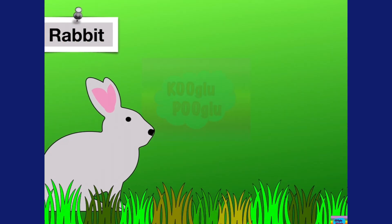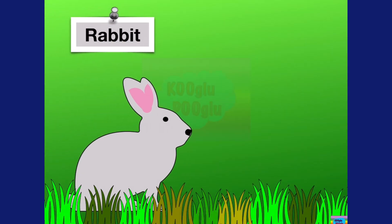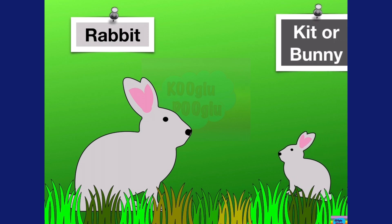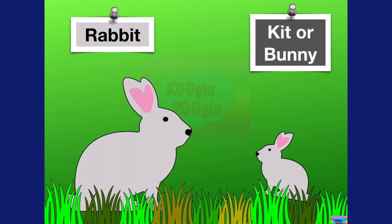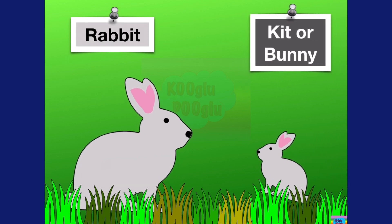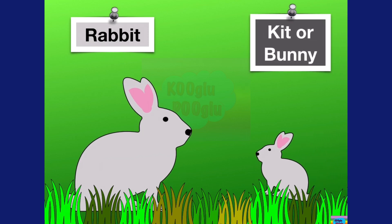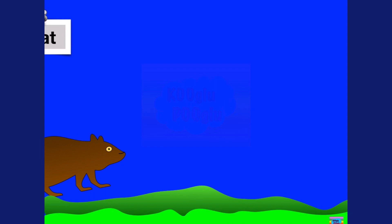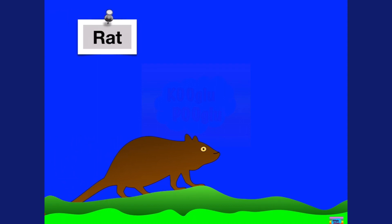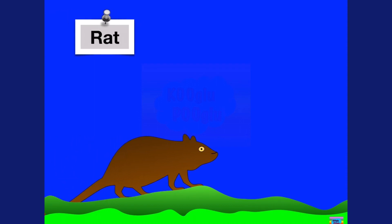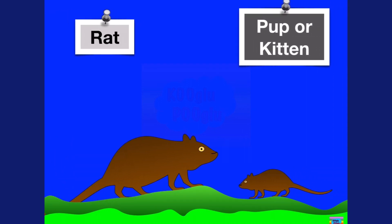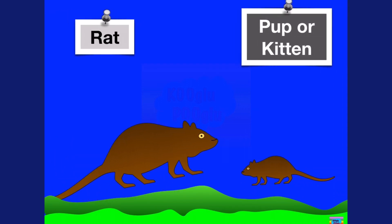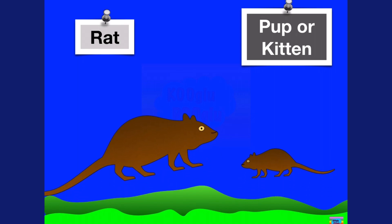Here we have a rabbit, and a baby rabbit is called a kit or a bunny. Here we have a rat, and a baby rat is called a pup or a kitten.